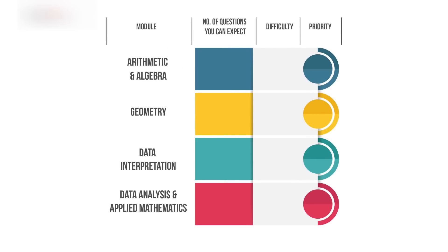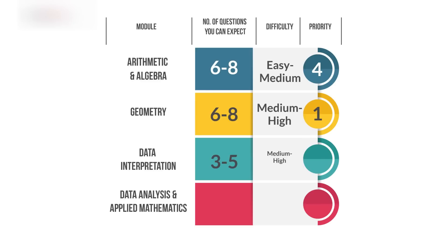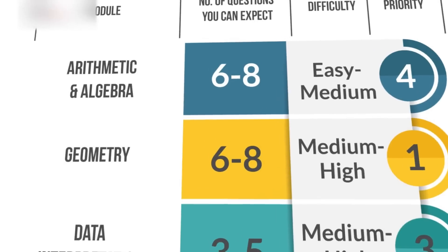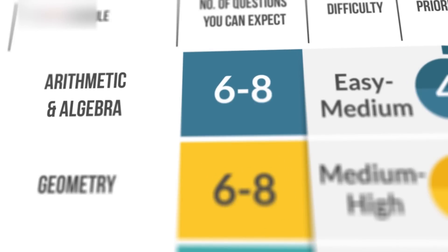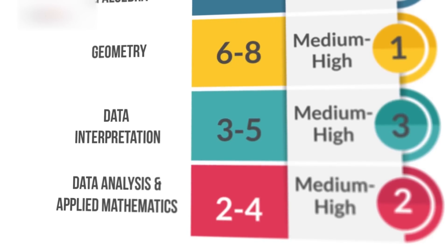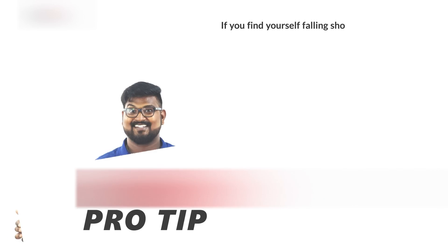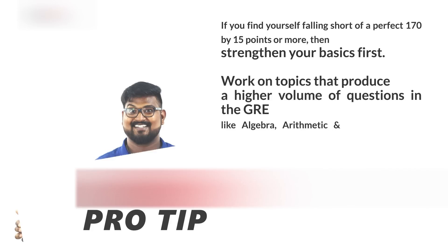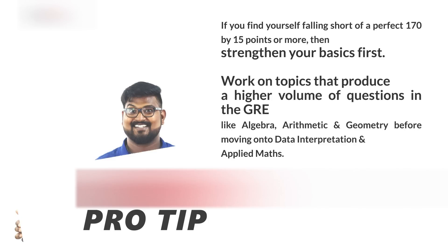In a section of 20 questions, you can expect six to eight questions from arithmetic and algebra, six to eight from geometry, three to five from data interpretation, and two to four from data analysis and applied mathematics. Although algebra and arithmetic are higher in volume, the difficulty level is higher in the last three topics — that's why students who score a perfect 170 prefer to master these topics. If you're falling short of 170 by 15 points or more, strengthen your basics first and work on arithmetic, algebra and geometry before moving on to data interpretation and applied mathematics.